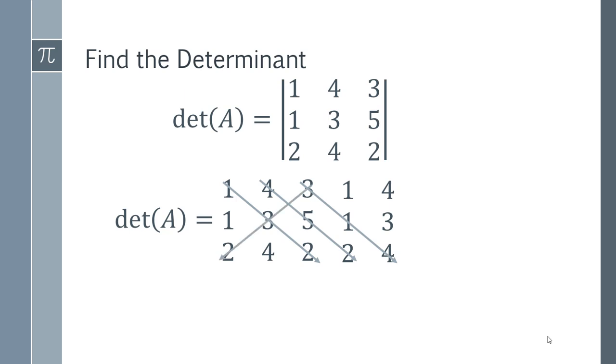And then we have to do the reverse. So we're going diagonally the opposite way in exactly the same way that I'm doing it. We're doing 3x3x2, and then we do another line, 1x5x4, and then 4x1x2. And each of these is going to be subtracted.